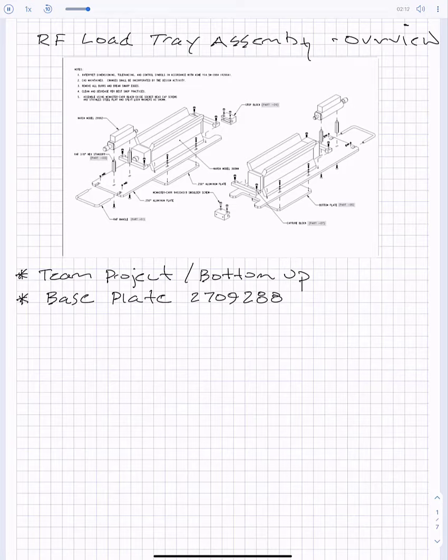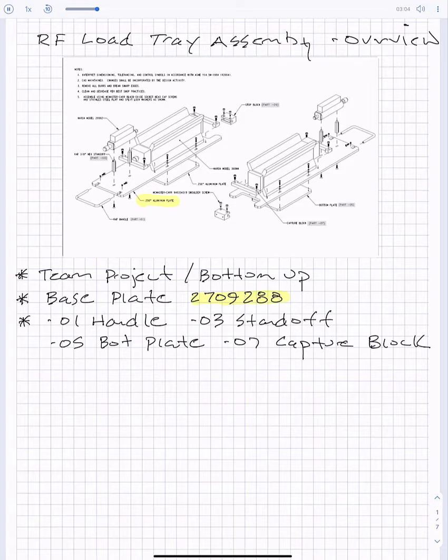Now the parts you're going to be designing are going to be as such. There's five of them, and they're labeled on the exploded view provided here on the sheet. The first part that I just described is 2709288, which is this part right here. The other parts are going to be: there's a dash-01 handle, a dash-03 standoff, a dash-05 bottom plate, a dash-07 capture block, and a dash-09 stop block.